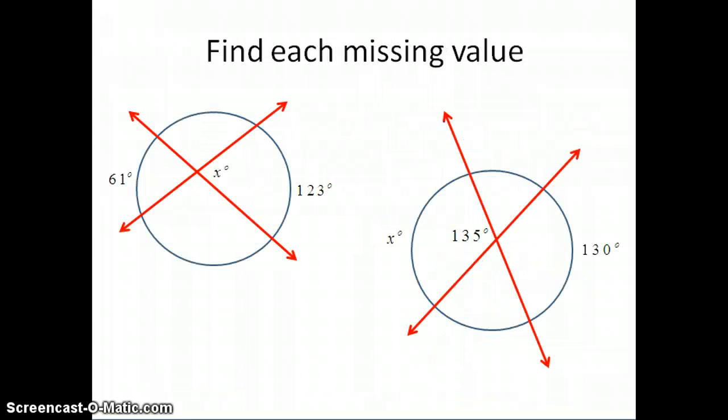I have two examples shown here. Both examples have secants that run through them, through the circles, and again secants are the lines. As you can see, we're looking for some angle measures. We're looking for the angle measure on the inside of the circle. So in both of these situations, the secants intersect inside the circle.